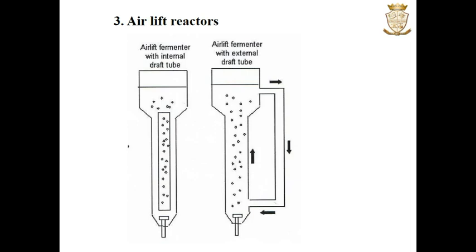The next type of bioreactor is the airlift reactor. Here the fermenter vessel is divided into two interconnected zones. The first zone is known as the riser and the second zone is known as the downcomer. In the riser zone, air or gas is pumped into the fermenter, which causes an upward movement of the media along with the pumping gas. In the downcomer zone, the media contents will move downwards. There are two types of airlift reactors. The first one is the internal loop airlift bioreactor, or the airlift fermenter with an internal draft tube.